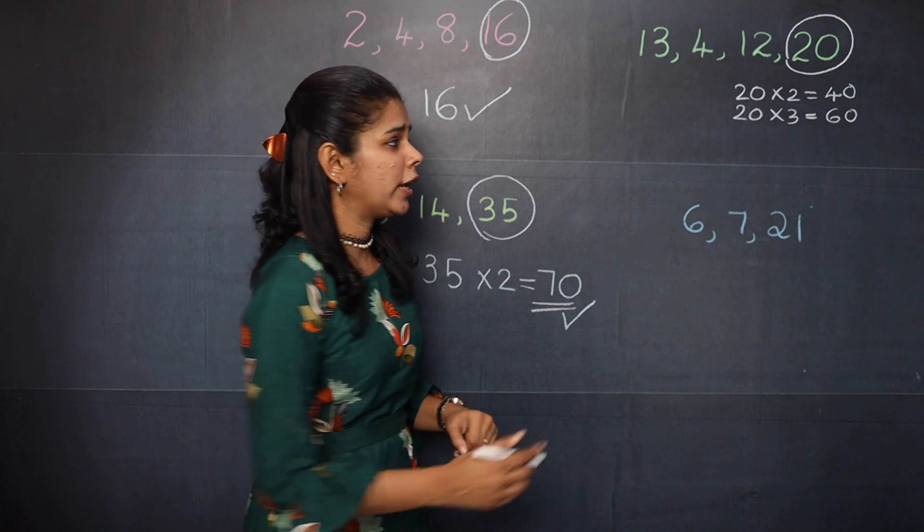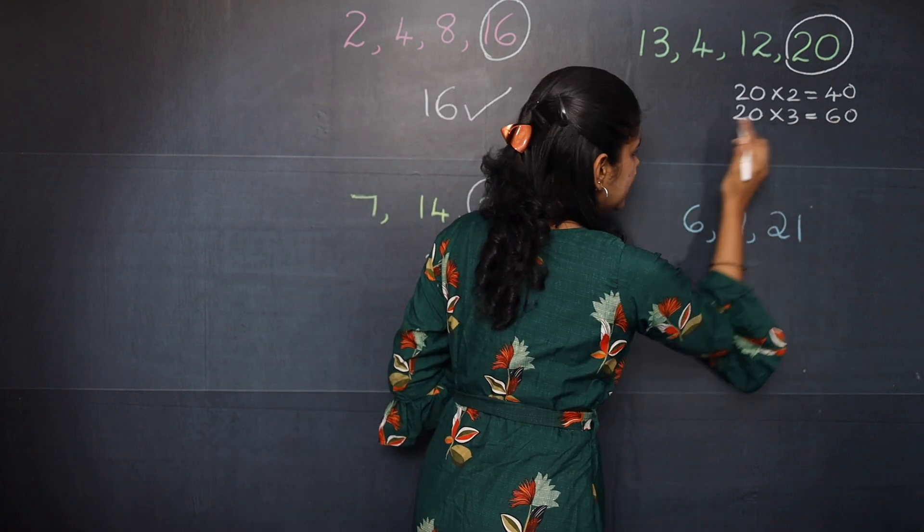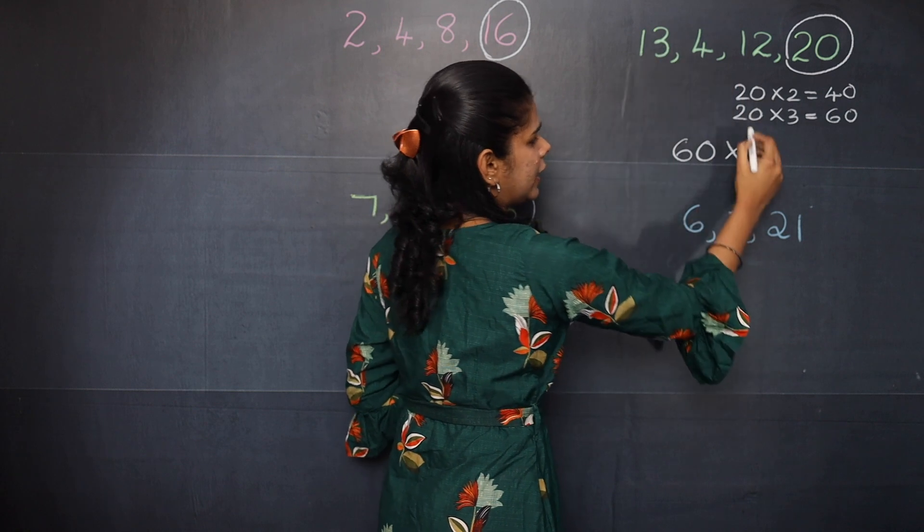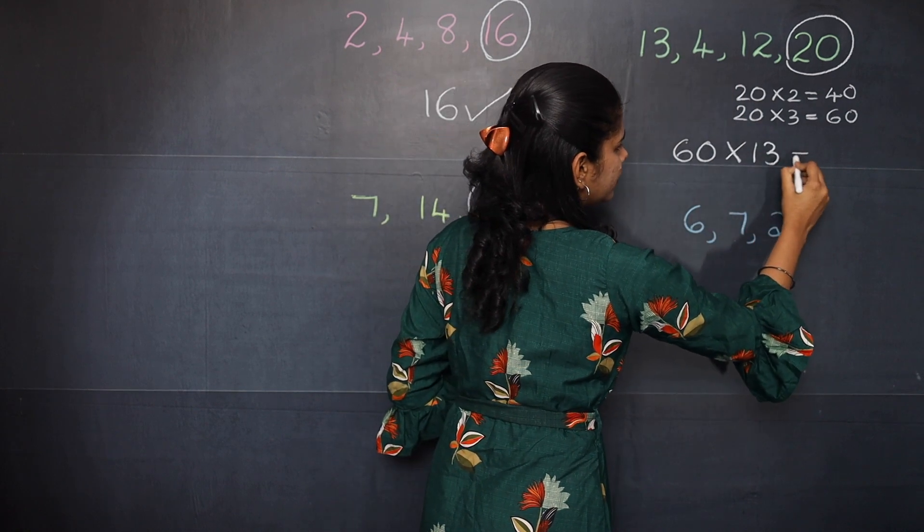you can see that that particular product won't be divisible by 13. In that case, your LCM will be 60 multiplied by 13. So it becomes 780.